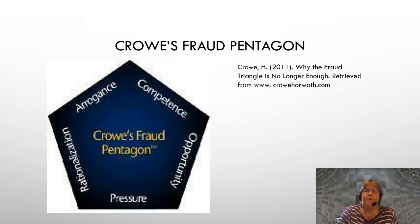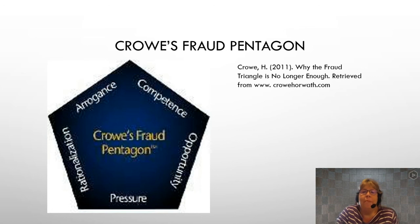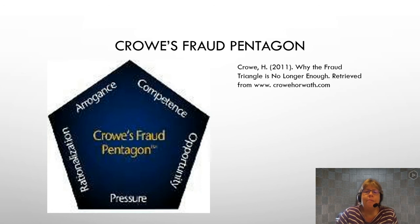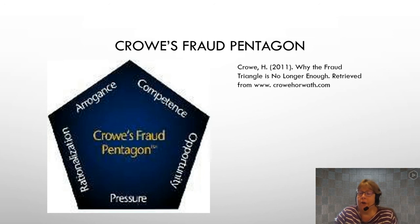Another view is Crow's fraud pentagon, which takes a slightly different view from the fraud diamond. It includes the same opportunity, pressure, and rationalization, but this research added arrogance. I think even for the accidental fraudster there is still a little bit of arrogance — the 'I can get away with this' type of thinking, maybe not to the same extreme as a predator.